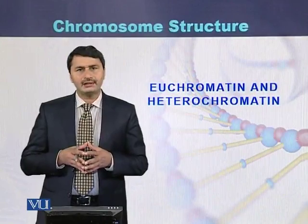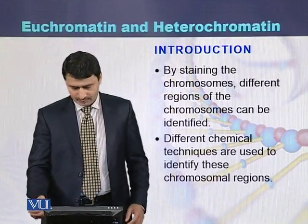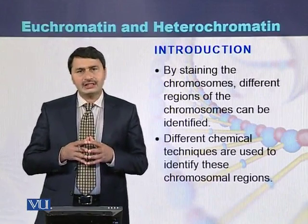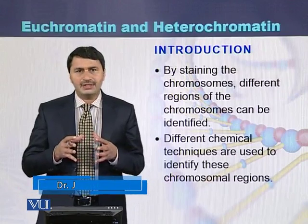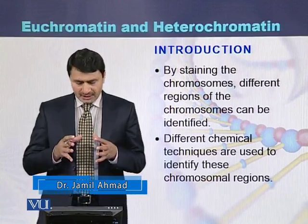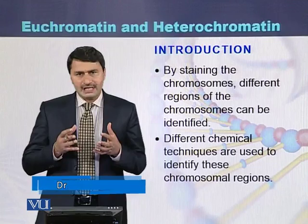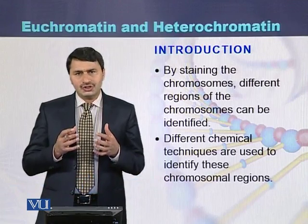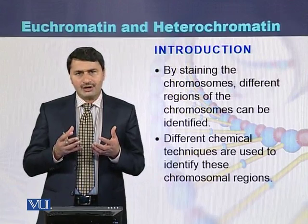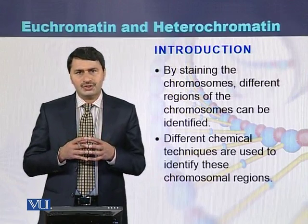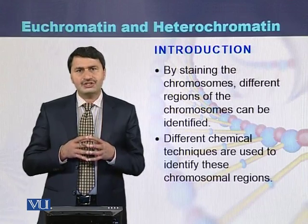U-chromatin and heterochromatin. By staining the chromosomes, different regions on the chromosomes can be identified. Different chemical techniques have been invented that are used to stain the chromosomes, and different regions or different bands on the chromosomes can be studied according to the technique which is used.